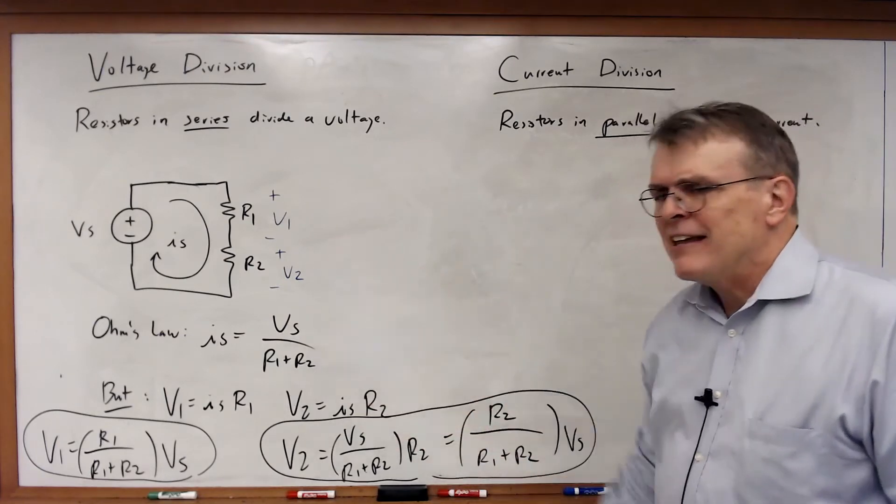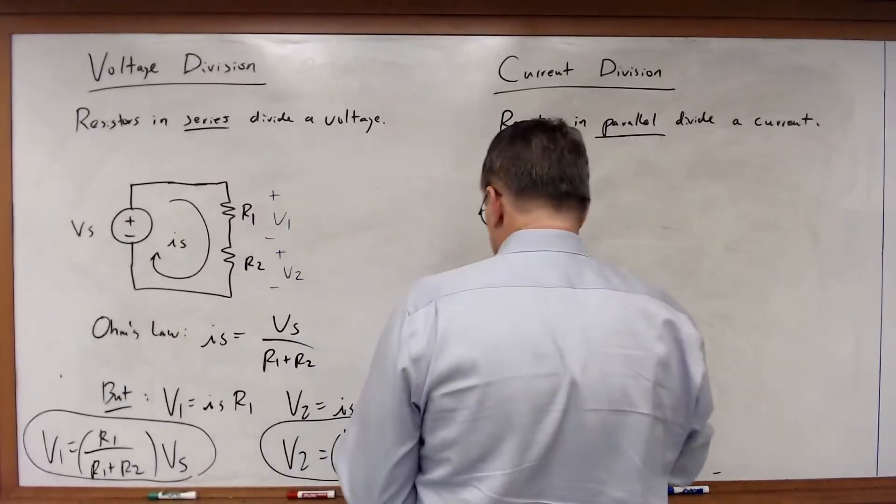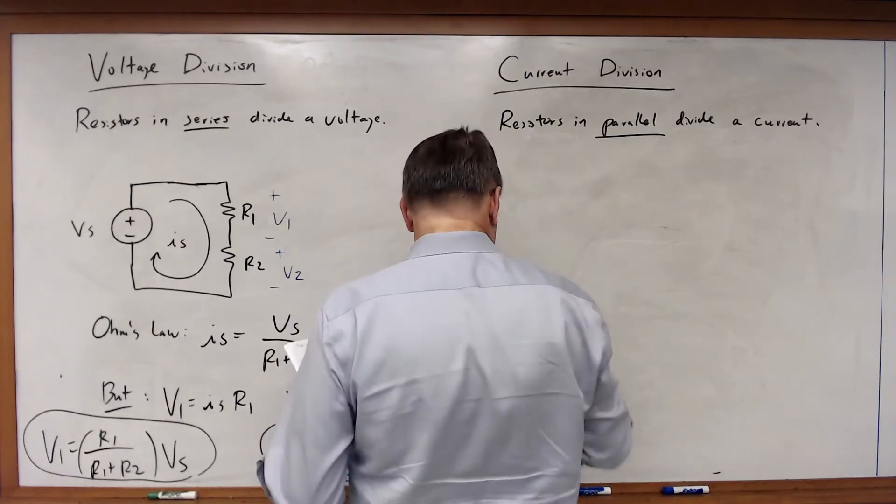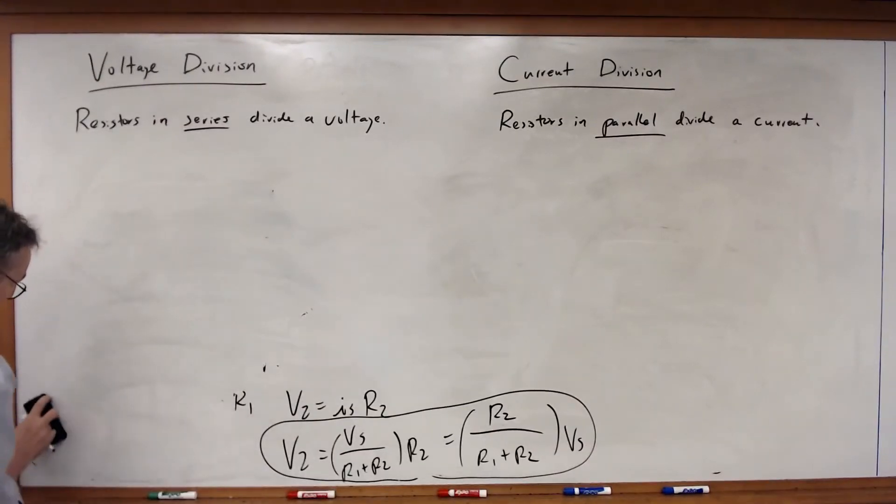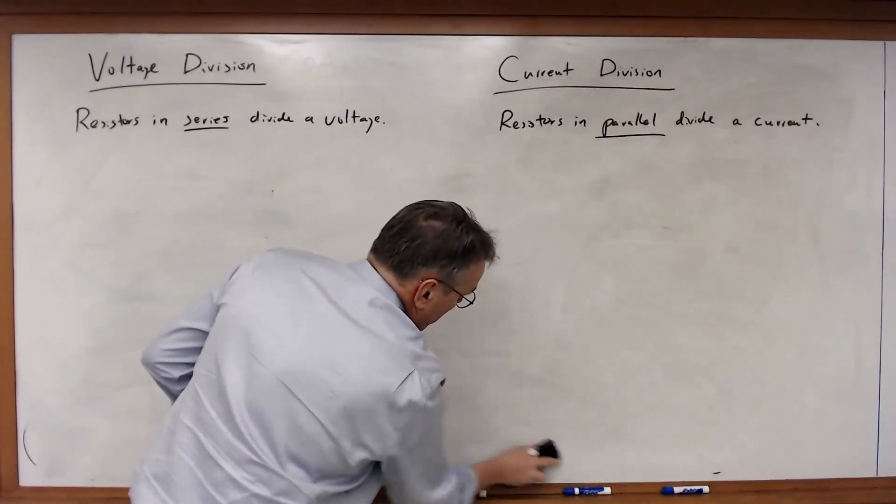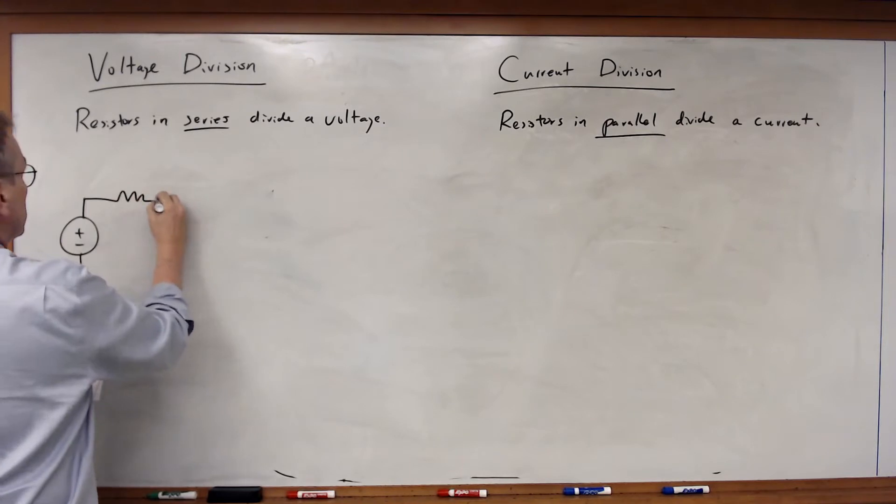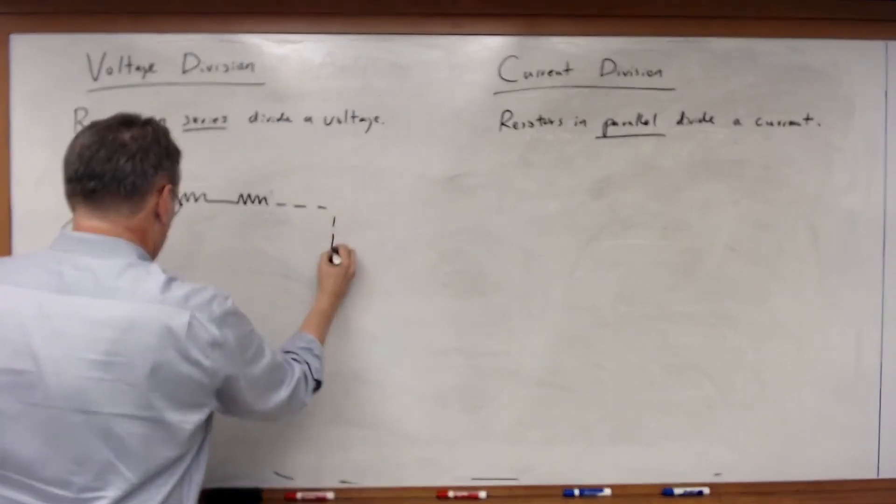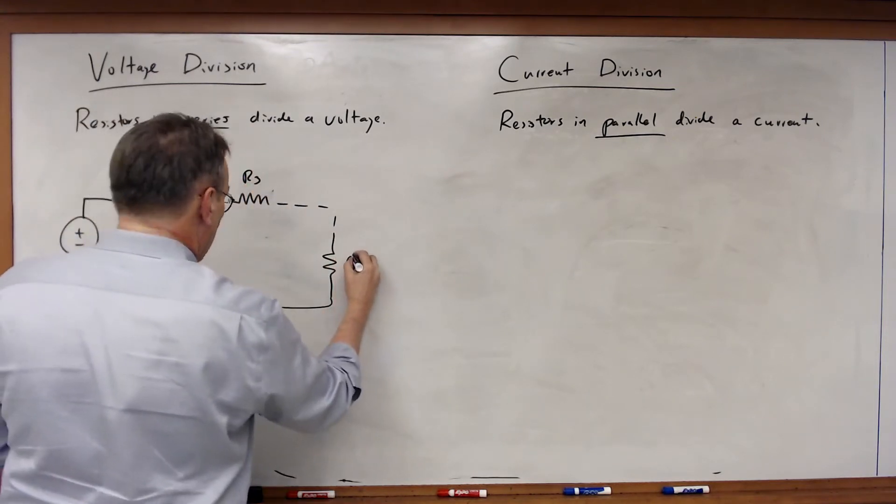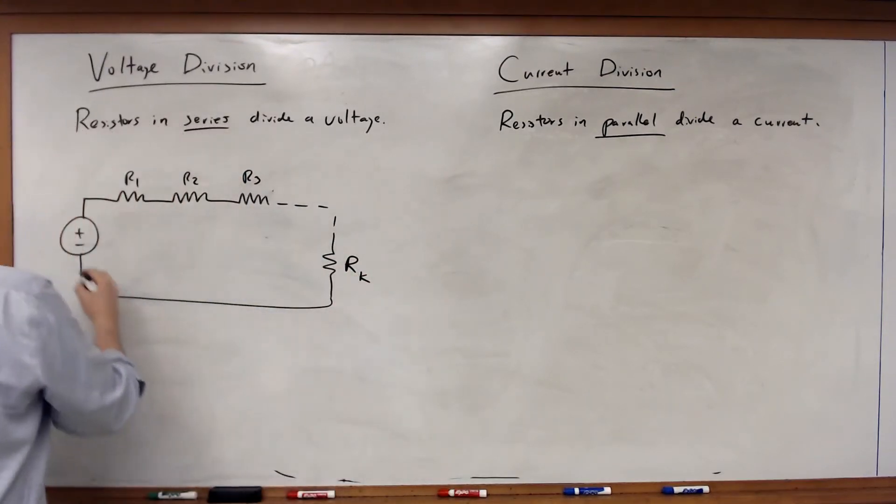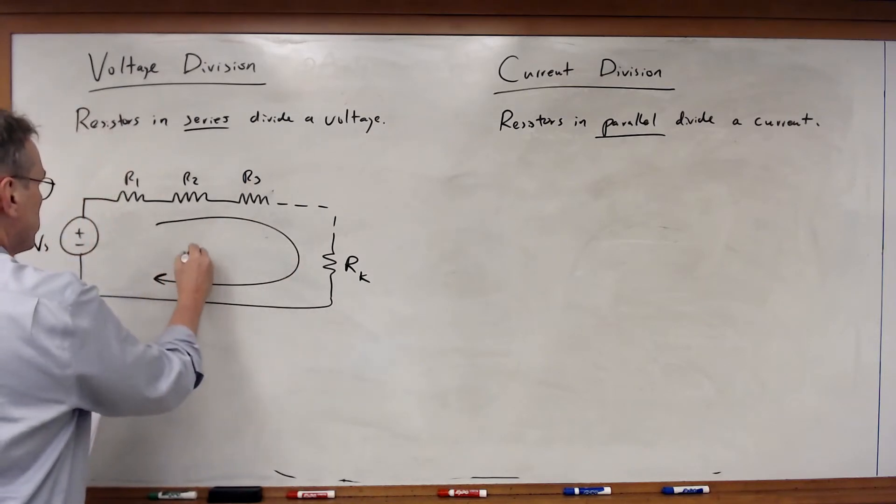Now if I've got a loop of resistors, K resistors connected together in series—I can do this with more than two resistors. Let's say I've got K resistors: R1, R2, R3, all the way to R sub K, any arbitrary number of resistors connected together in series. In this case, I have the same current I sub S flowing around.